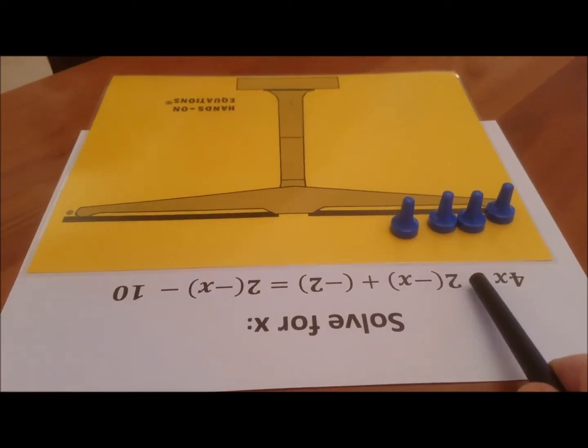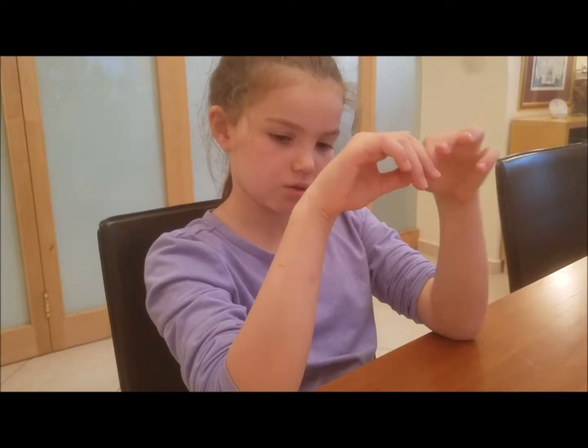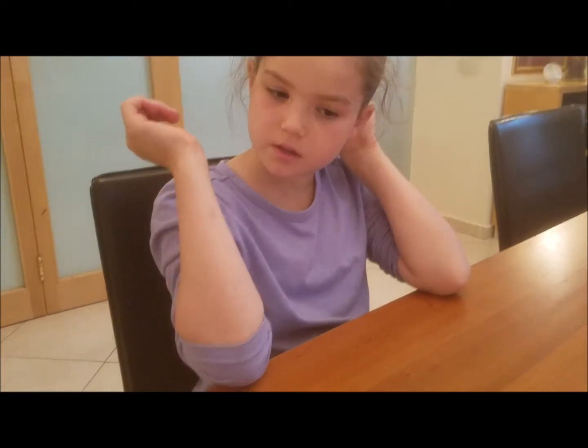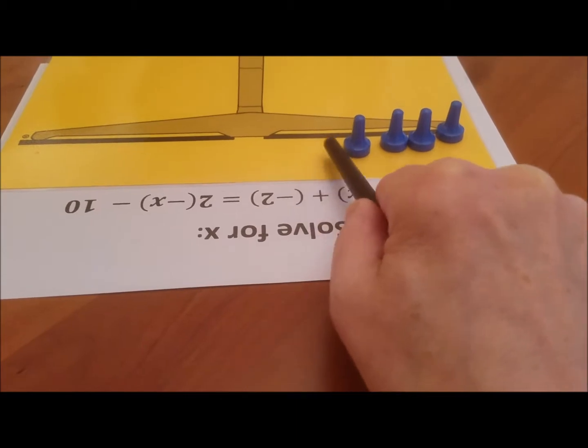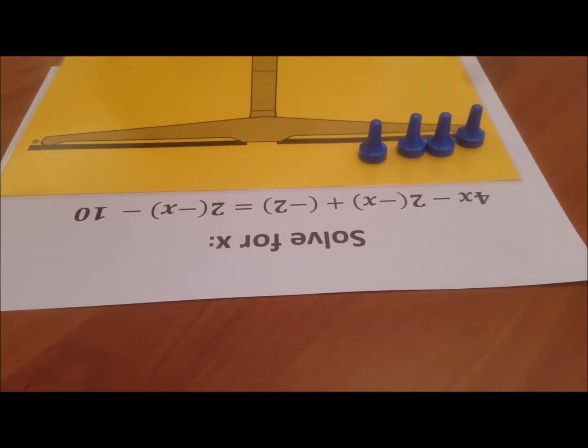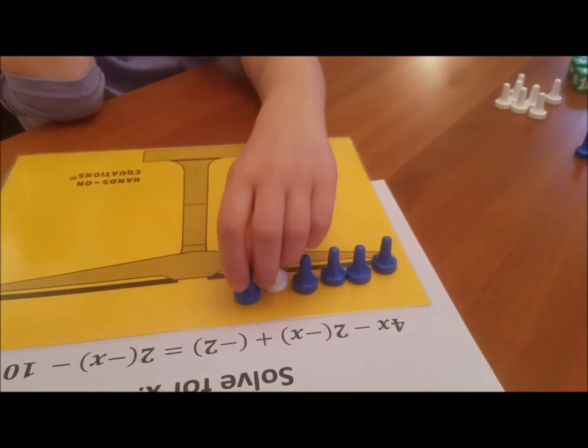Okay, what does the instruction tell you to do now? Take away two times the opposite of x. Okay, but I don't see here, we don't see the opposite of x to take away, so what do you want to do there in order to do that? Add two zeros.